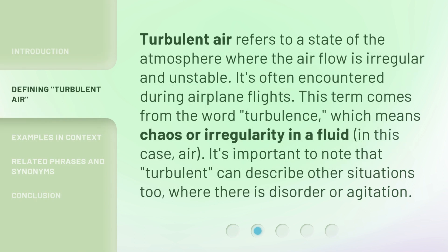Turbulent air refers to a state of the atmosphere where the airflow is irregular and unstable. It's often encountered during airplane flights. This term comes from the word 'turbulence,' which means chaos or irregularity in a fluid — in this case, air. It's important to note that 'turbulent' can describe other situations too, where there is disorder or agitation.